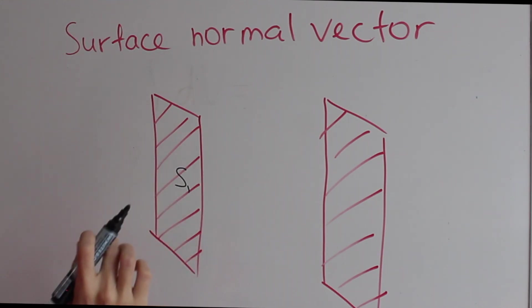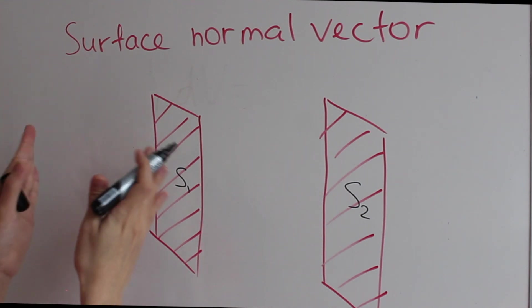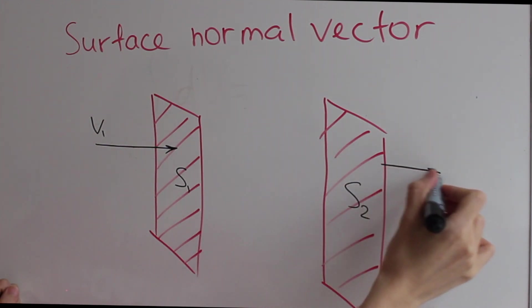Remember this one was S1, surface 1, and this one was S2. And how did the air flow through these surfaces? Well for this side we had air coming in with speed v1 and coming out through the second surface with speed v2.